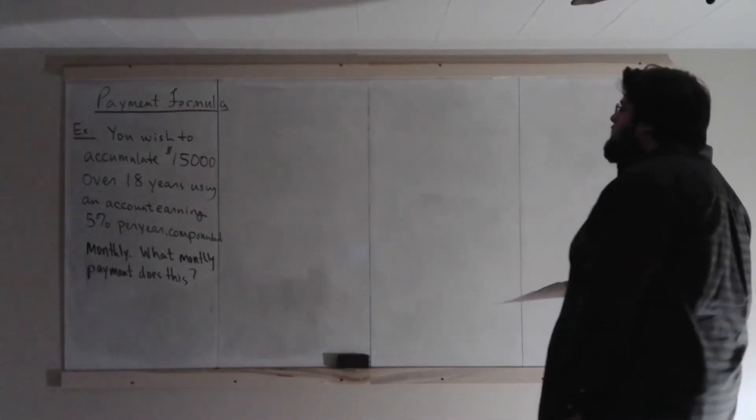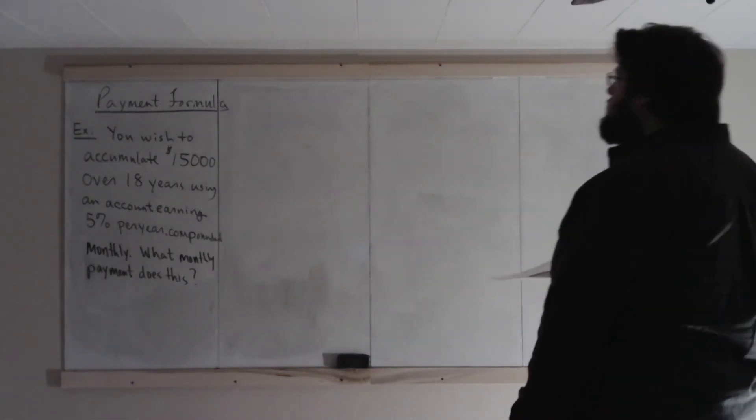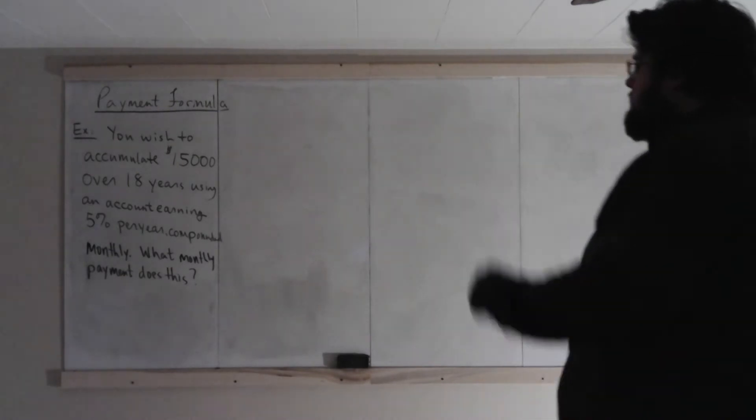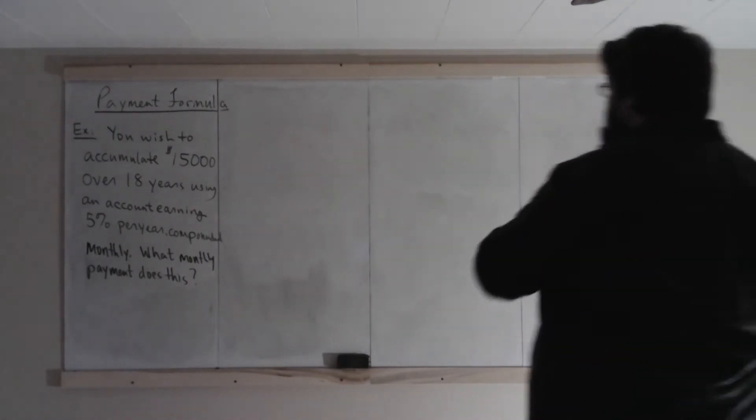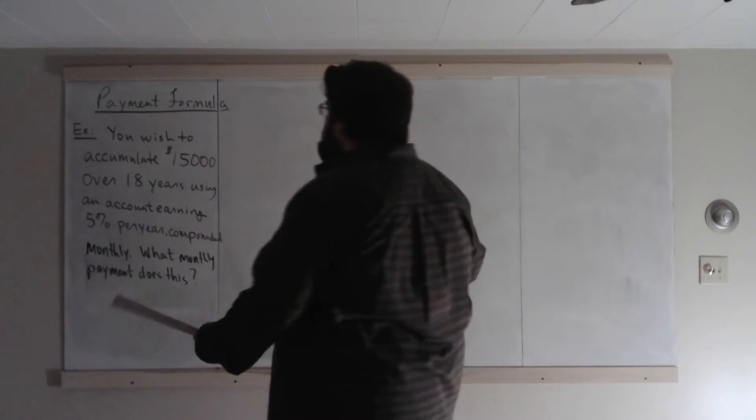You wish to accumulate $15,000 over 18 years using an account earning 5% per year, compounded monthly. What monthly payment will do this?